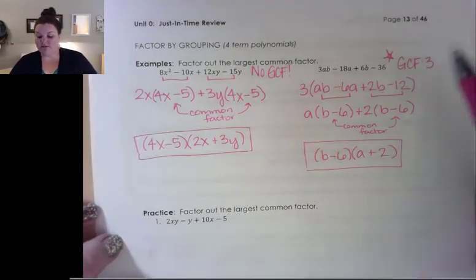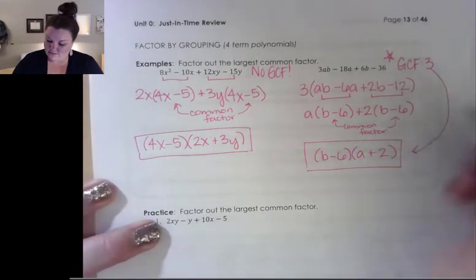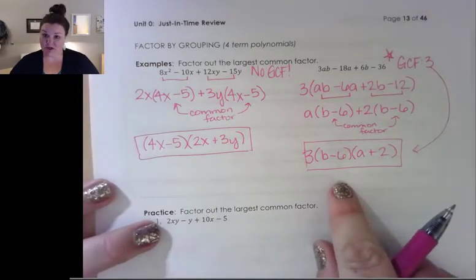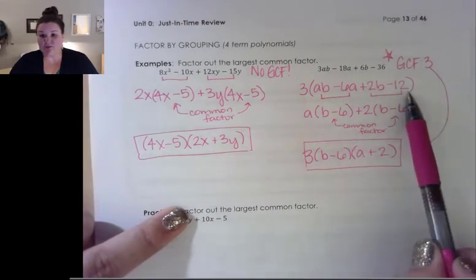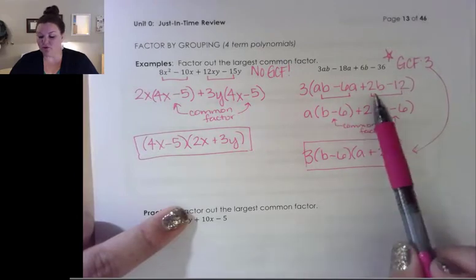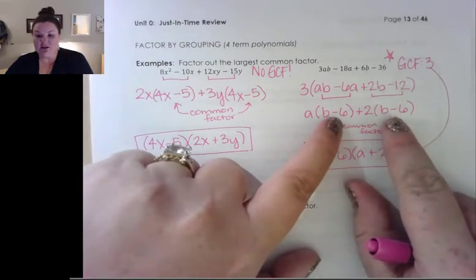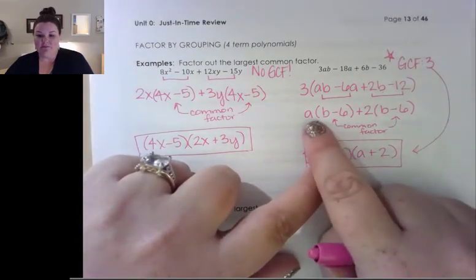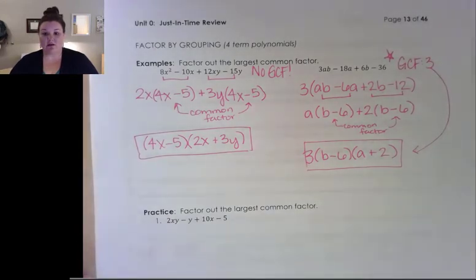Always look for a greatest common factor first — I said that and then forgot to put it back on the answer. The 3 goes back on the front. So we look for our greatest common factor first, take it out, and then if we're left with four terms, we go into grouping. The idea behind grouping is that when we take out a greatest common factor, hopefully the leftovers match. Then we take those leftovers out and that determines our other term. Put your greatest common factor back on the front.